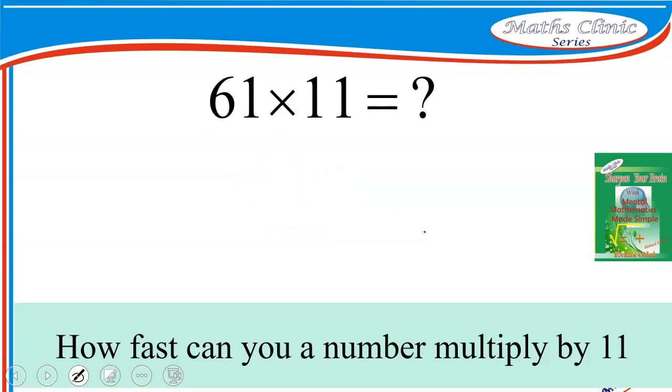Try another example. What is 61 times 11? Pick your 6 and your 1 apart. Add 6 plus 1, and that is 7. Put 7 here, and that is the answer for 61 times 11. Isn't that beautiful? Okay, let me give you the trickiest one.